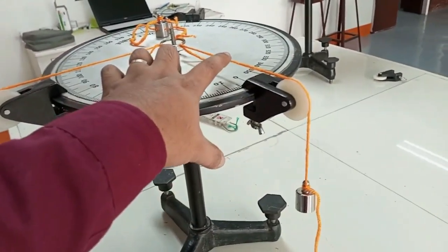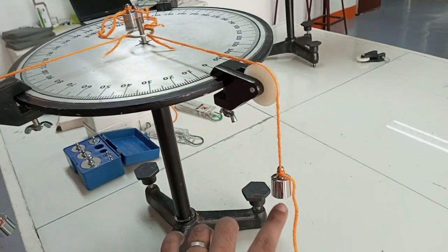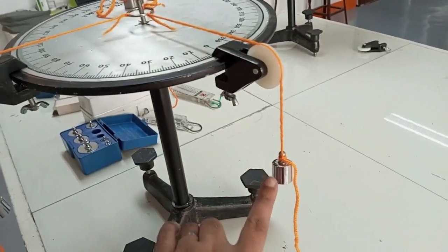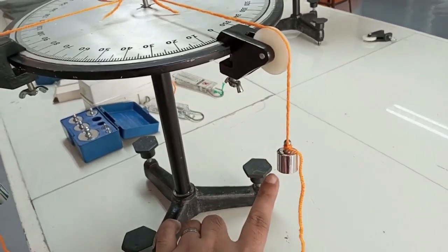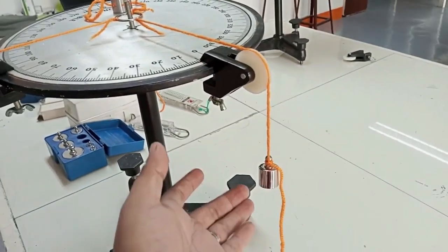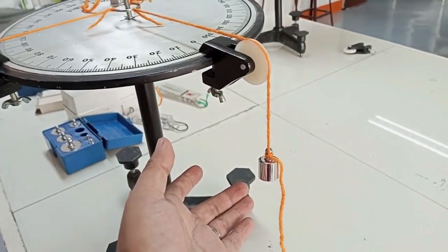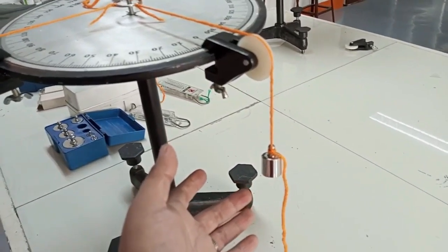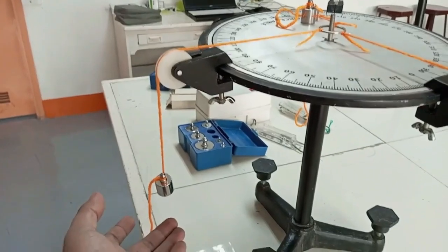I have a string here, and on the other end of the string is a suspended mass. This mass is acted upon by gravity, so there is a force of gravity which is equivalent to the weight. Weight is a vector, and then another one is here.